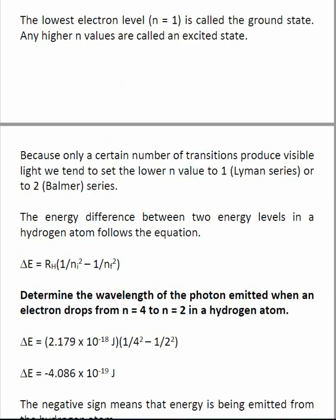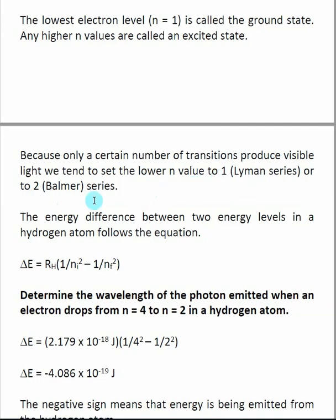Because there were so many transitions for a hydrogen atom, some of the transitions have specific names. Transitions where the lower n value is 1 — such as n=1 to 2, 1 to 3, 1 to 4, 1 to 5 — are called the Lyman series. Transitions where the lower n value is 2 — such as 2 to 3, 2 to 4, 2 to 5 — are called the Balmer series. These transitions were so well studied that they were given specific names, and you may still see these terms used occasionally.